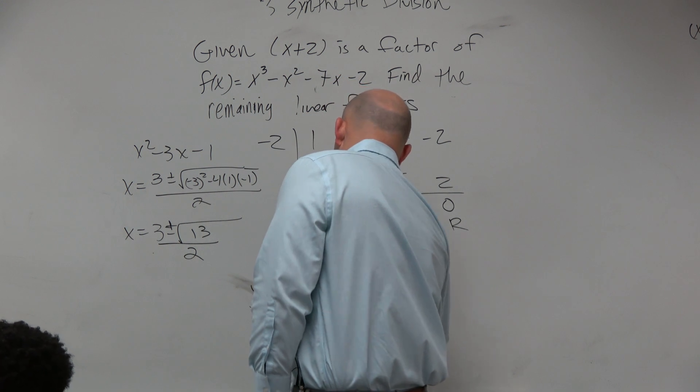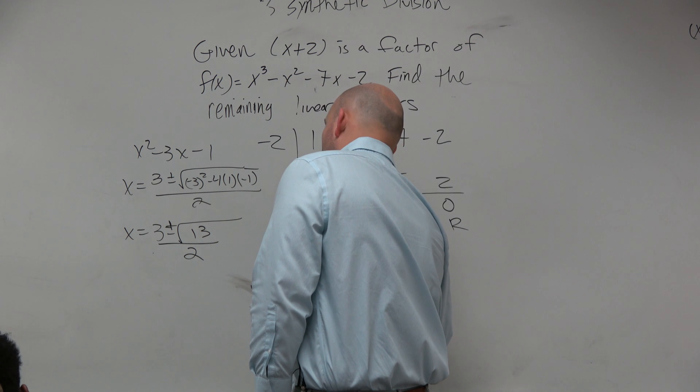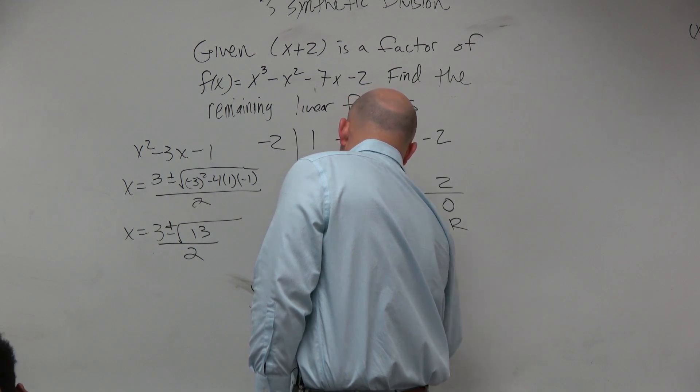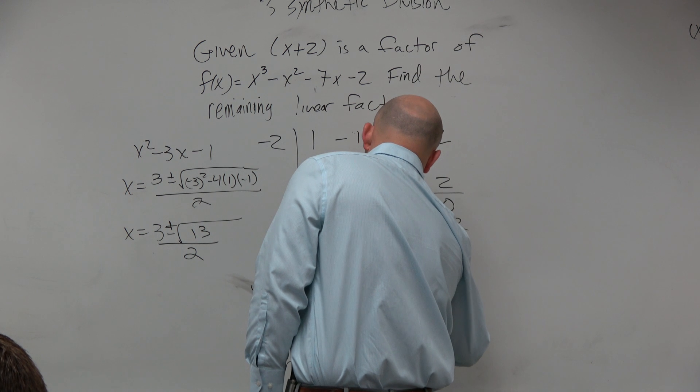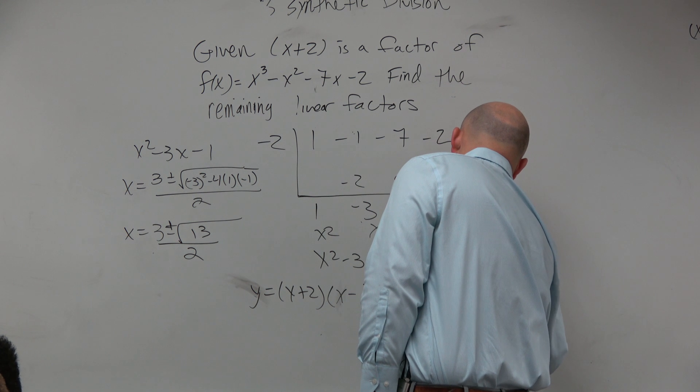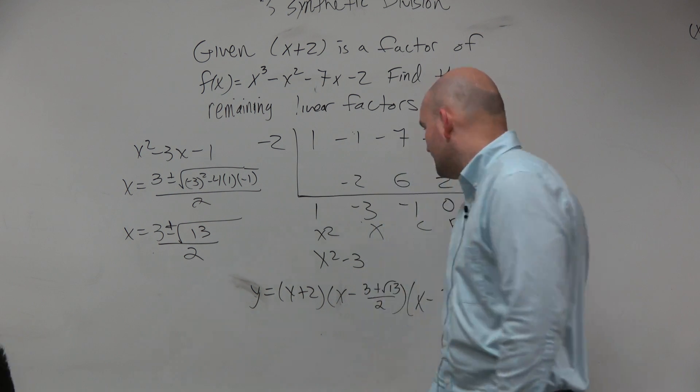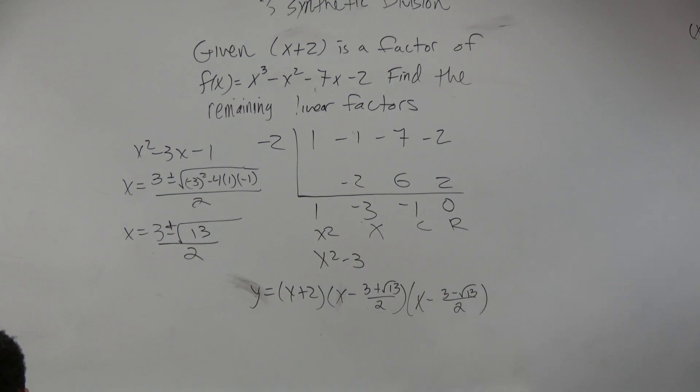And then this is going to be x minus 3 plus the square root of 13 over 2 and x minus 3 minus the square root of 13 over 2. Those would be my two remaining factors based on the quadratic formula.